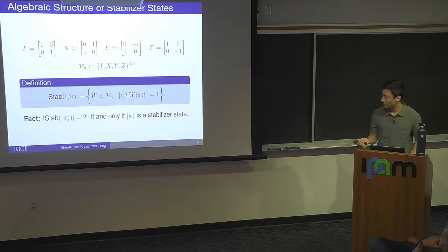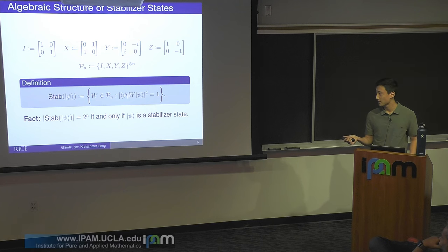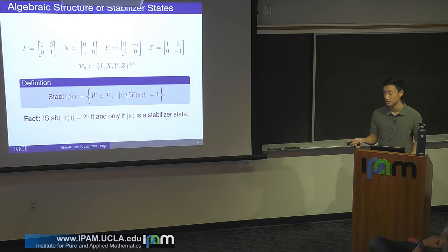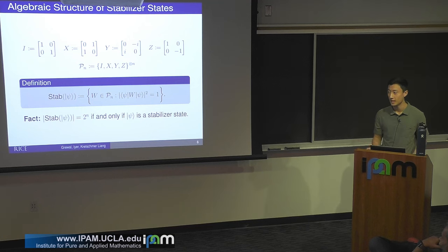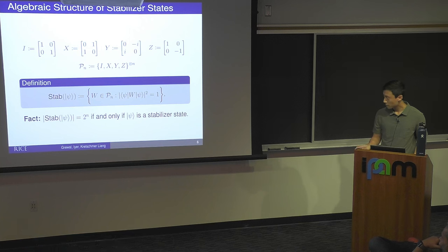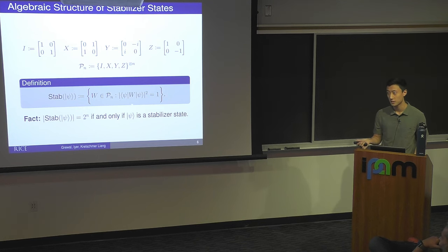Stabilizer states are the only states where |stab(ψ)| = 2ⁿ, which is the maximal size of an abelian group of Pauli matrices. Once you have stab(ψ), you essentially have the state, because these are constraints on your state. With 2ⁿ constraints, only one state satisfies all of them simultaneously.